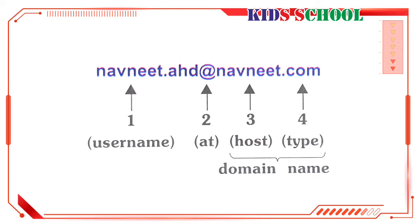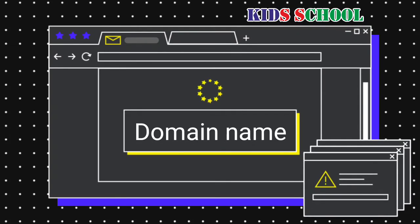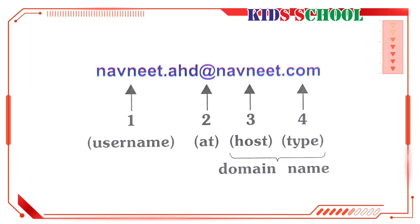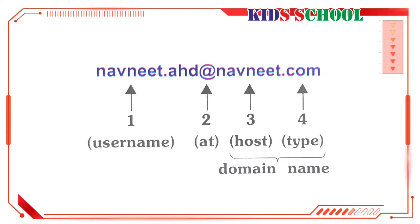The username is always followed by the @ symbol. The host — for example, nowneet — and the type of site, such as .com, together form the domain name.